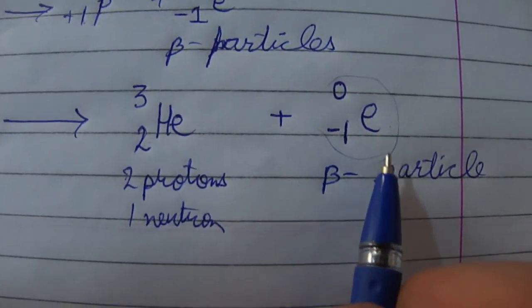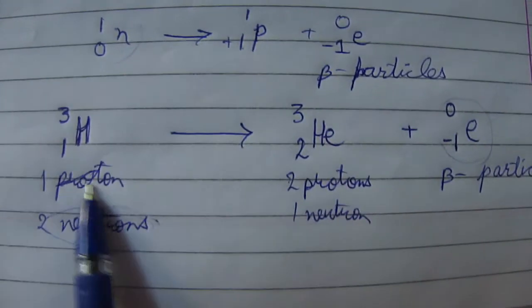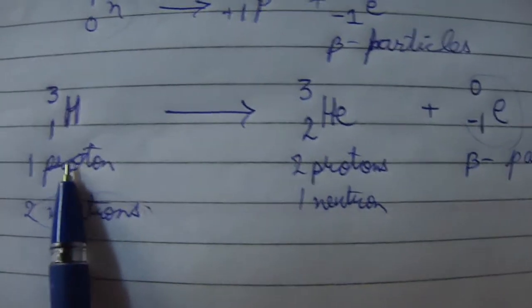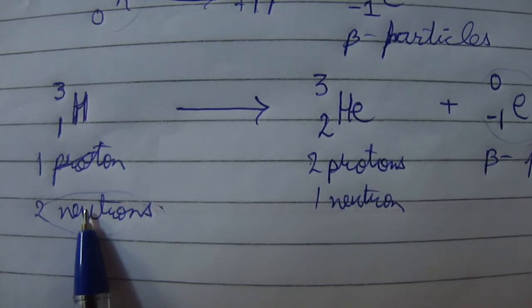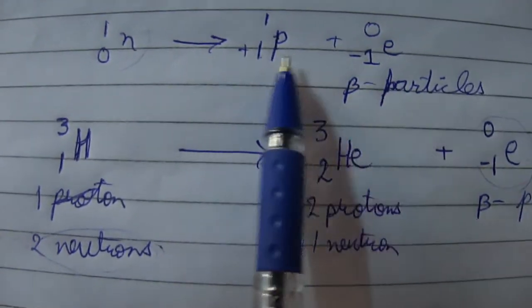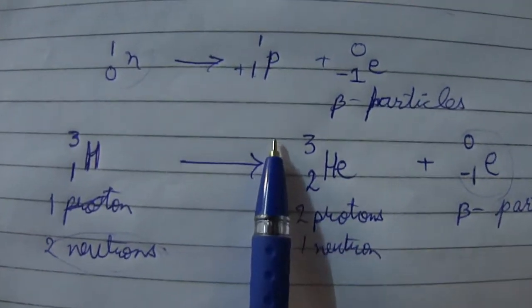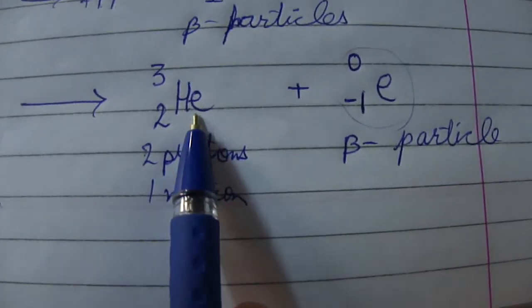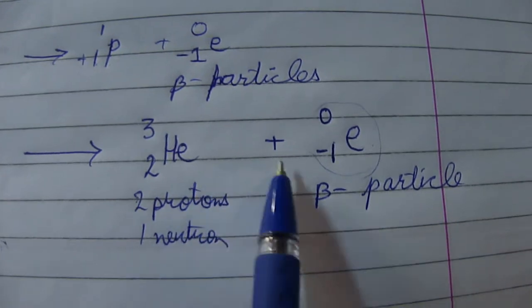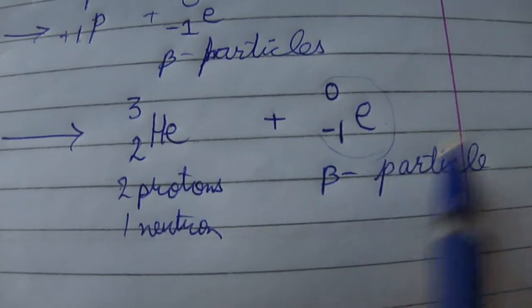In summary, this is the beta emission of tritium: one neutron is converted into one proton and one electron. The proton remains in the nucleus, raising the atomic number to two, forming a helium atom. The emitted electron is called the beta particle.